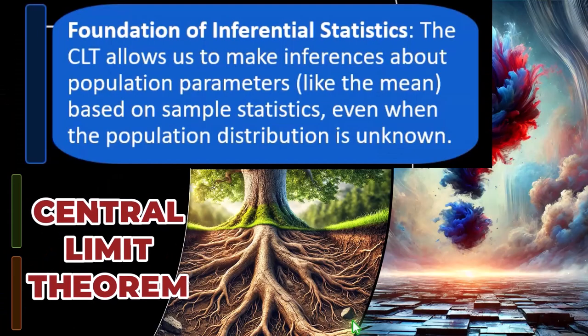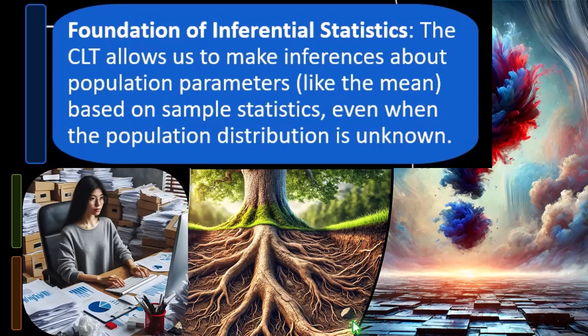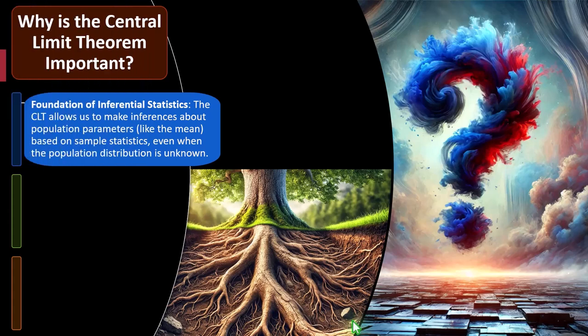The CLT — Central Limit Theorem — allows us to make inferences about population parameters like the mean, otherwise known as the average or middle point of a data set, based on sample statistics, even when the population distribution is unknown. We often want to find that middle point of a data set, such as the average height of people or the average number of widgets produced by a manufacturing company, which we can't test the entire population for, but we might be able to take a sample to give us an idea about that mean and the confidence level around it.